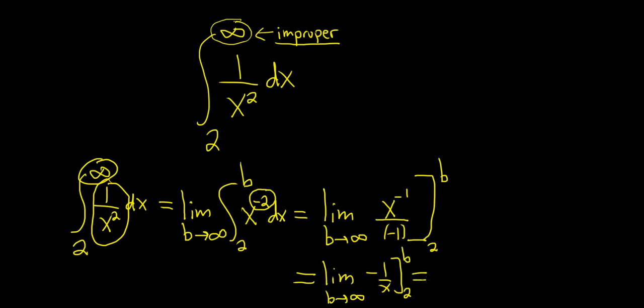So this is equal to the limit as b approaches infinity. So first you plug in the b. So we get negative 1 over b. Then we plug in the 2. So minus negative 1 over 2. Just like that.